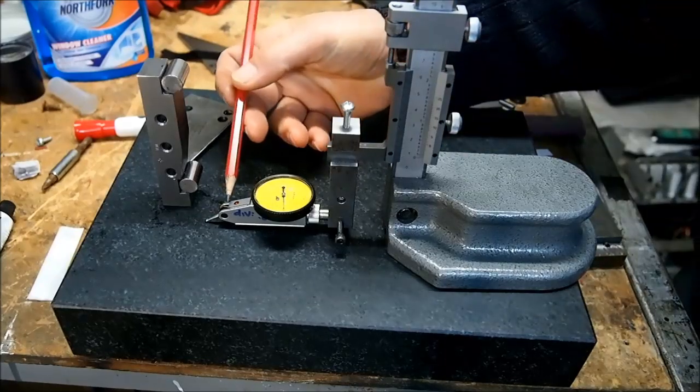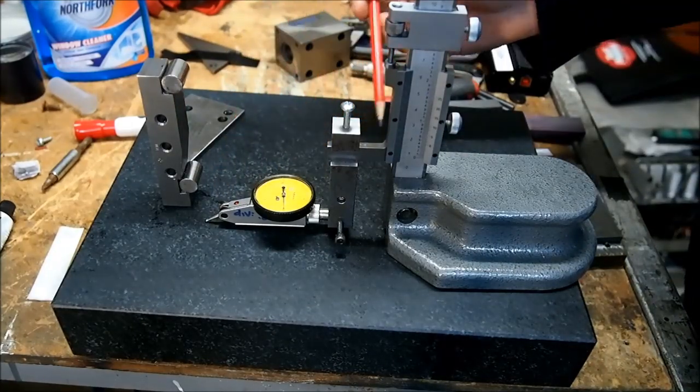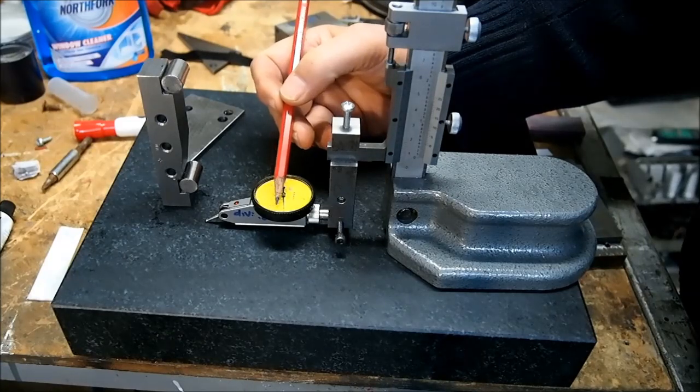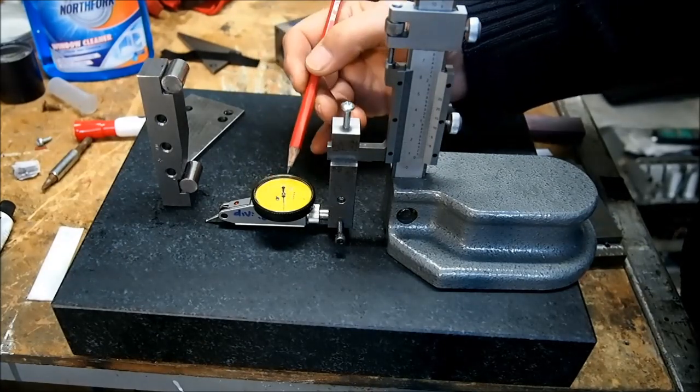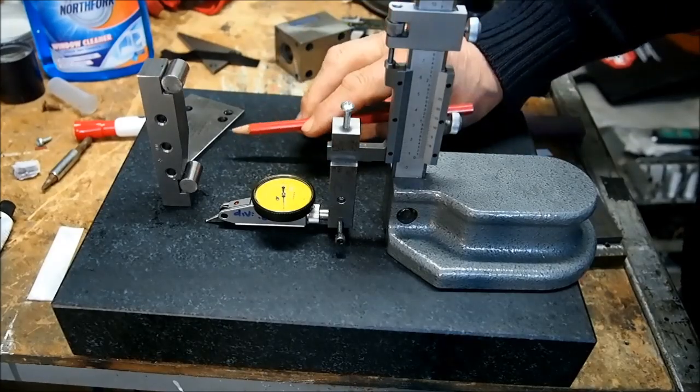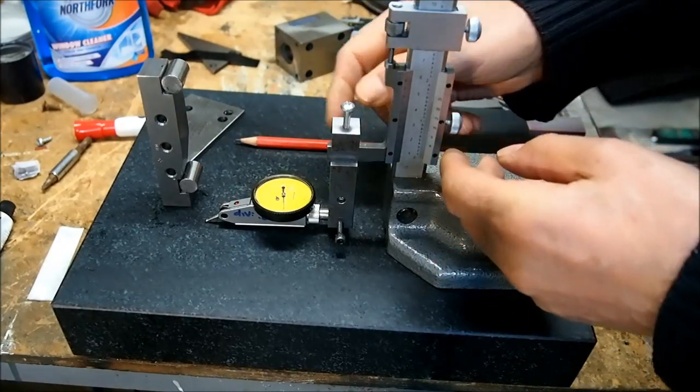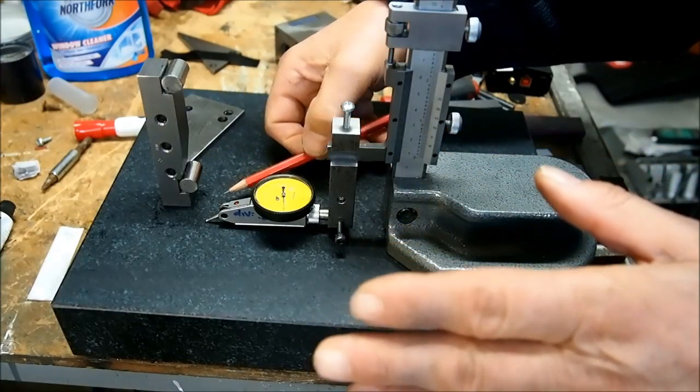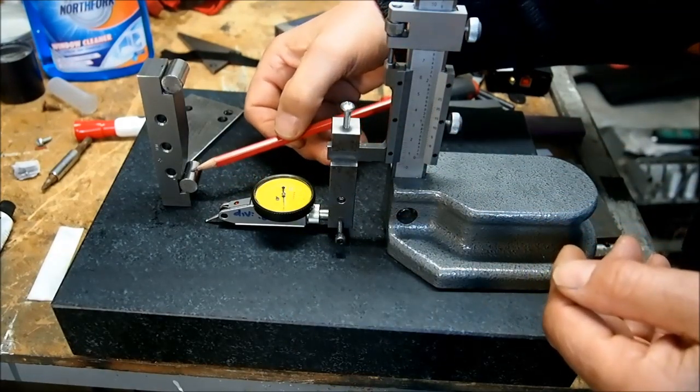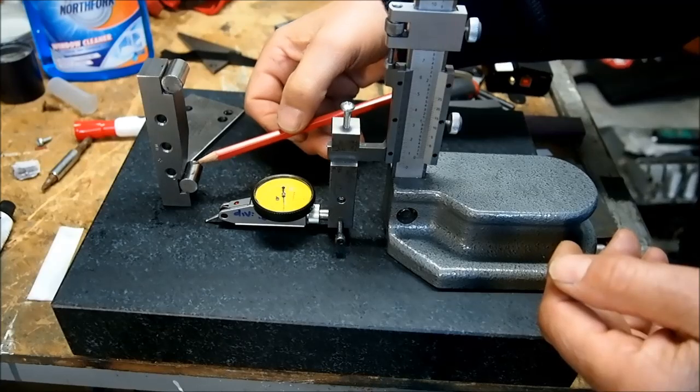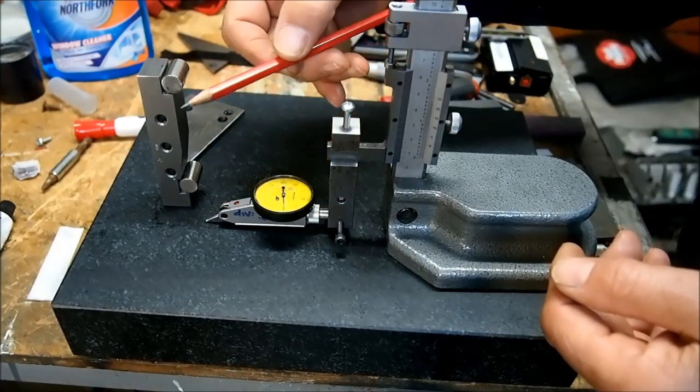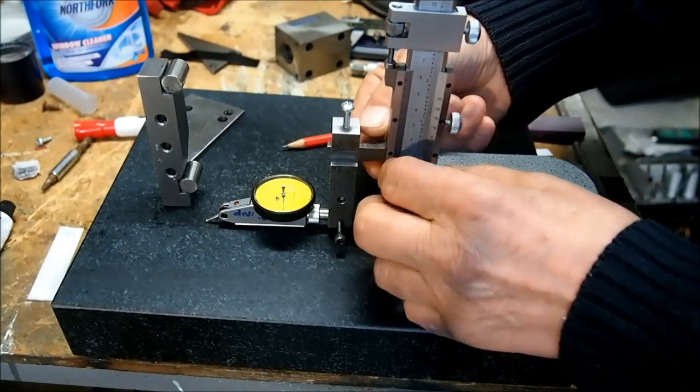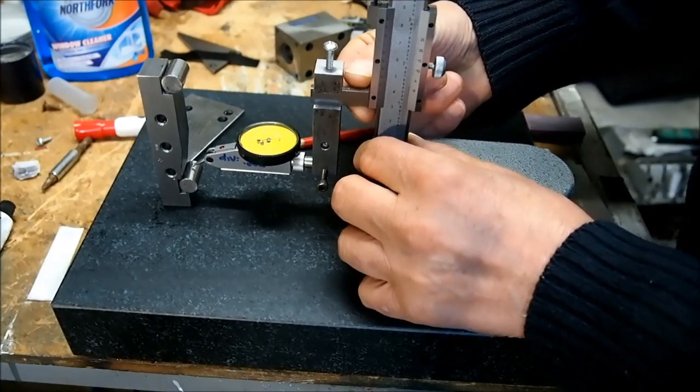I've got my indicator set up on the stand. This indicator major division is a hundredth of a millimetre and each minor division is 2 microns. So it's a pretty sensitive gauge. What I'm going to do is measure the height of that surface there and then ring some gauge blocks equal to that height, and then we'll add a 75mm gauge block to that stack and see whether the gauge block stack and that surface there match.